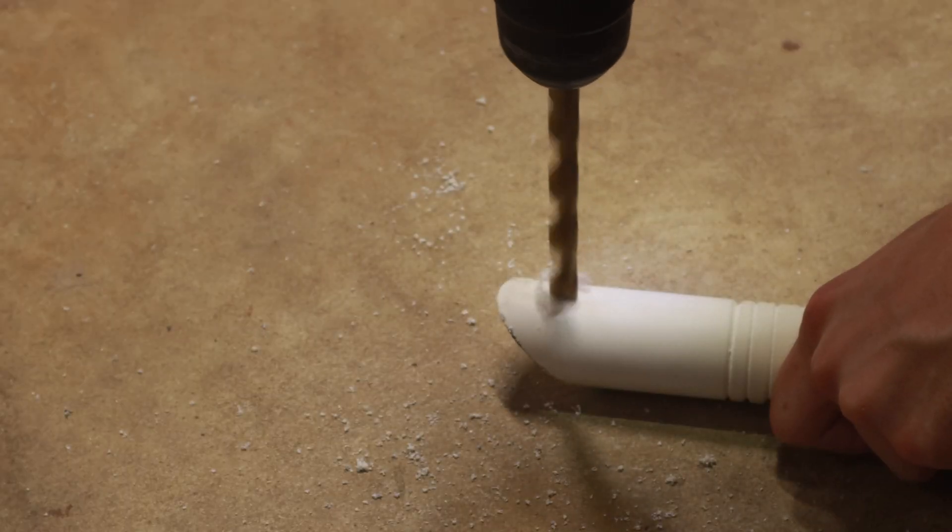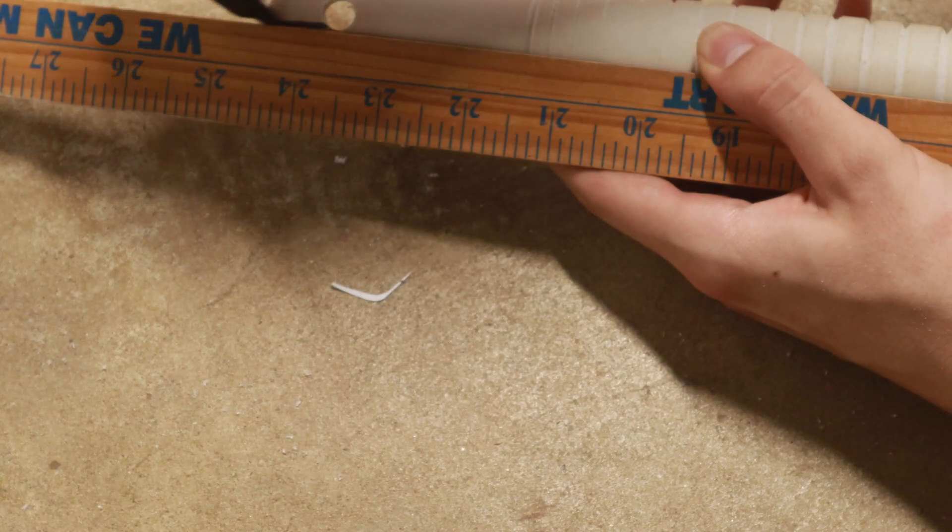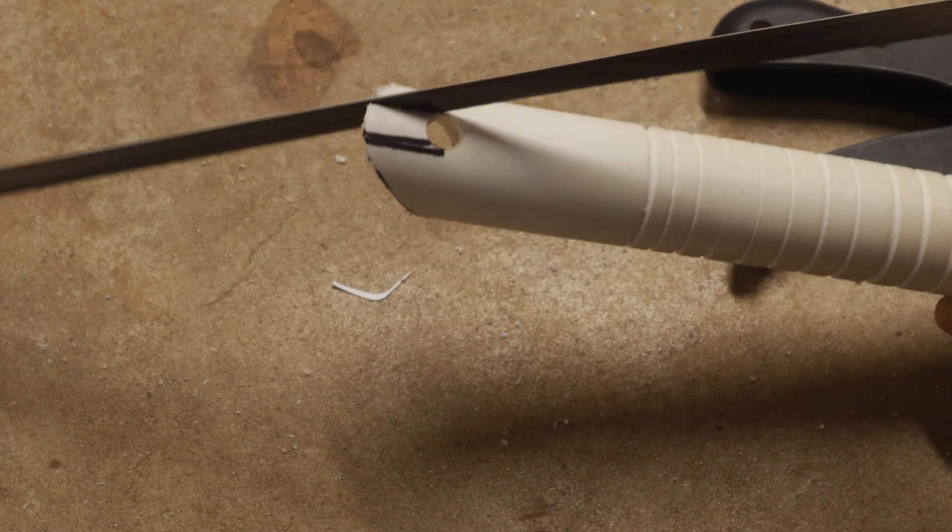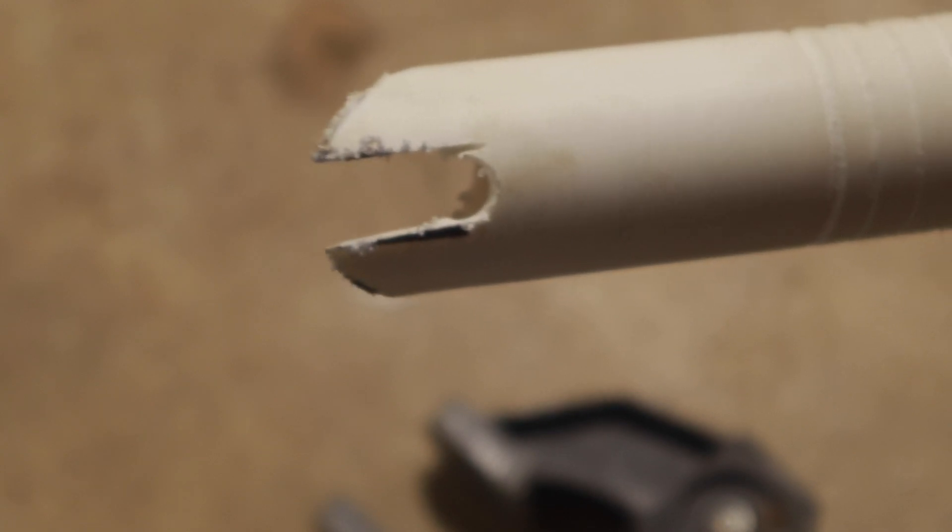On the long side of the emitter, I'll drill a small hole and then mark from the edge of the hole to the end of the emitter. Then I'll use a hacksaw to cut from the end to the hole at the edges to create this nice slot for showcasing the blade.